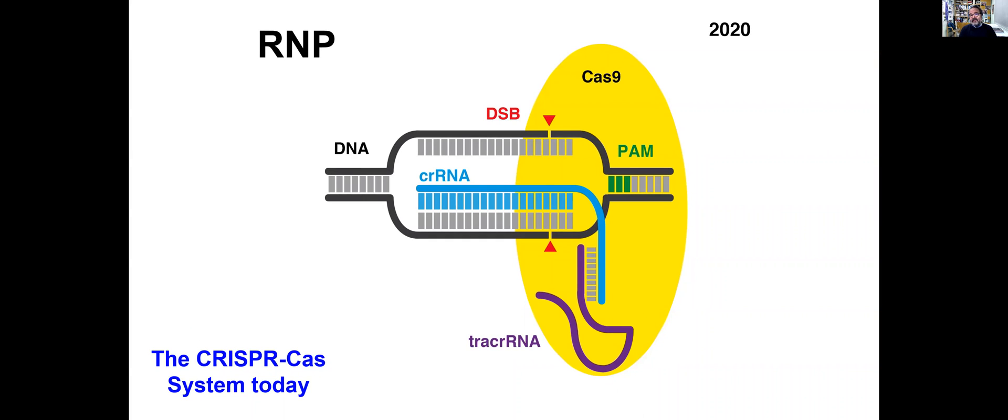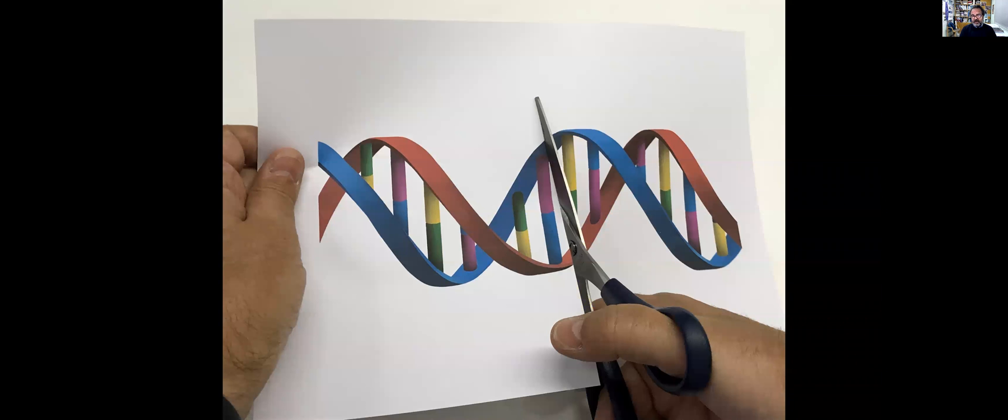Nowadays, eight years later, what is mostly used are these ribonuclear particles, RNPs. This is a combination of a protein, recombinant protein, the Cas9, together with two small RNA molecules that all together can be purchased. This is all commercially available and can be used for genome editing experiments.